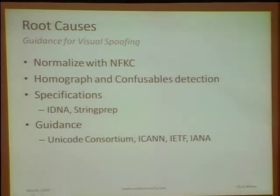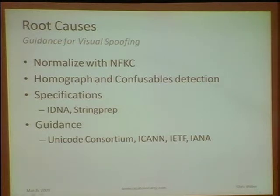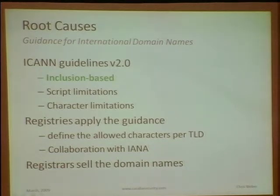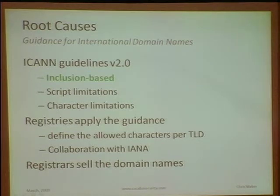It's a problem — we can't have users being fooled that easily. It jeopardizes the whole concept of IDN. The guidance around this is normalization, providing confusable detection — I'm working on a tool to do this — and following the IDNA and string prep specifications. Guidance is also provided from ICANN. ICANN's inclusion-based guidance has a default deny-all approach, script limitations, and character limitations, telling registries like VeriSign and Peer to limit certain scripts and characters in domain labels.